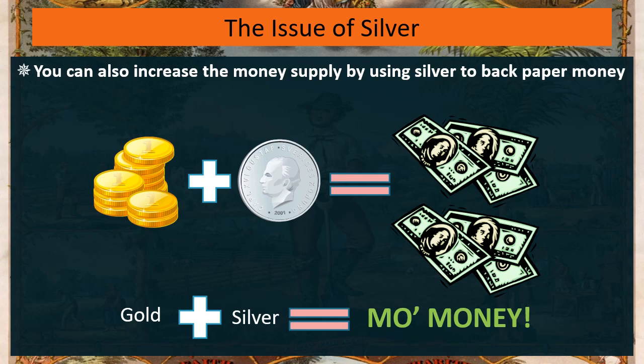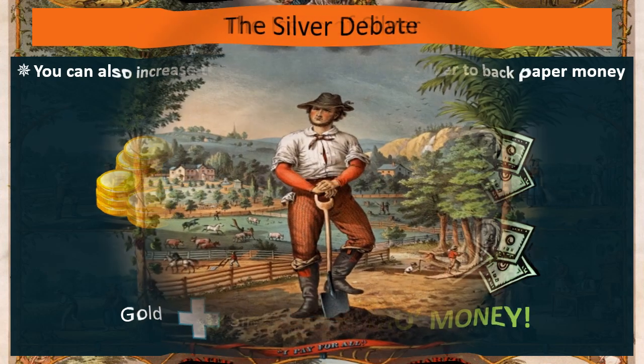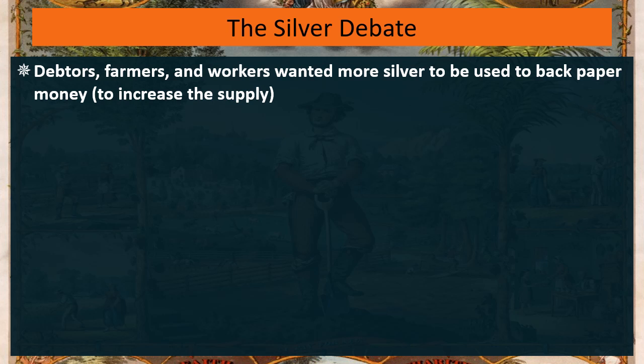Gold plus silver equals more money — and of course, more money, more problems. That's going to set up a debate over silver in the 19th century. Many debtors, farmers, and workers wanted to see more silver in the US money supply. They wanted more silver because it could be used to generate more paper, or if there's not going to be paper money floating around, more silver still increases the money supply by itself.